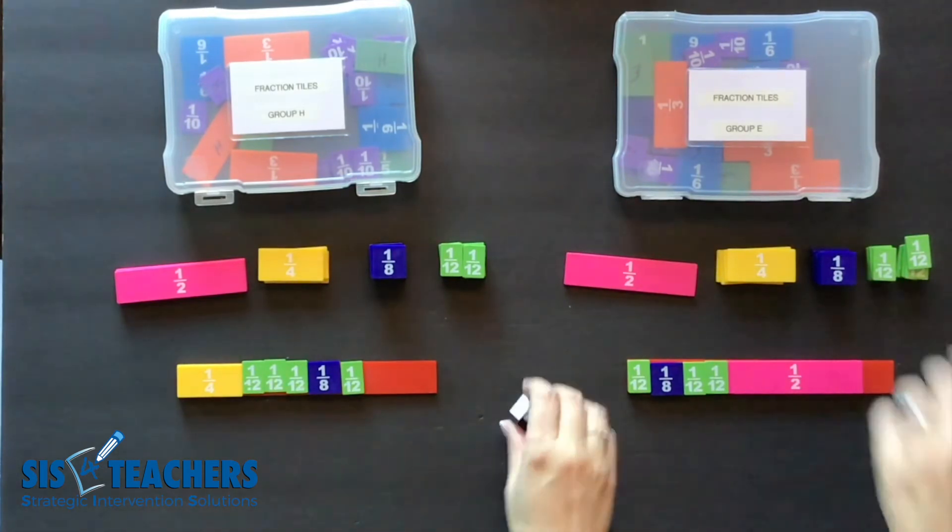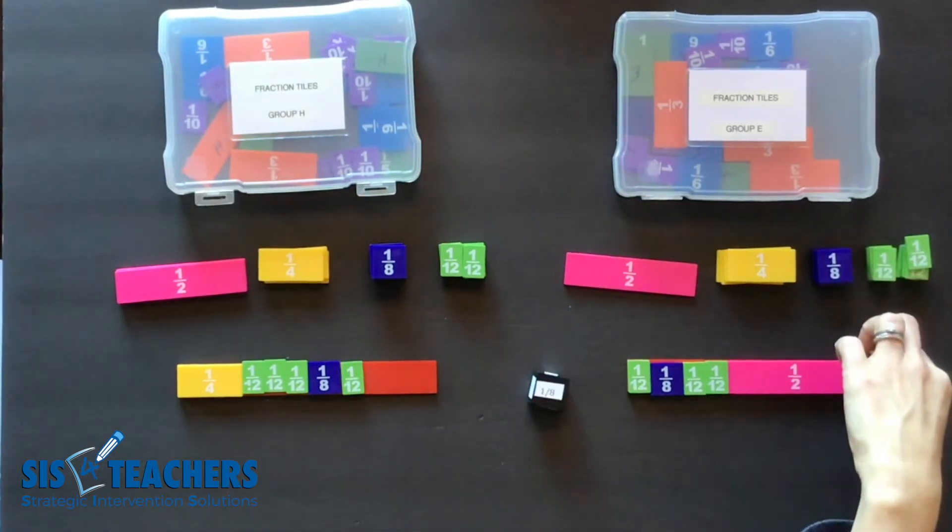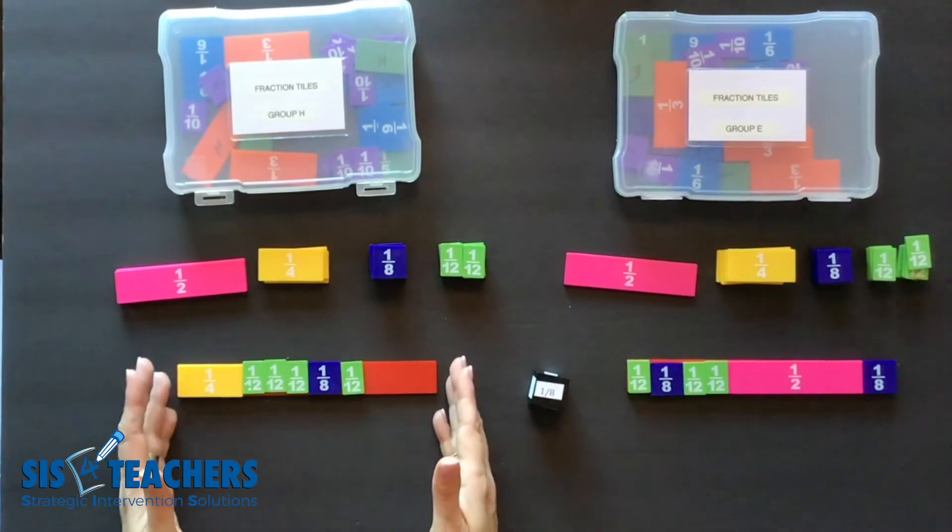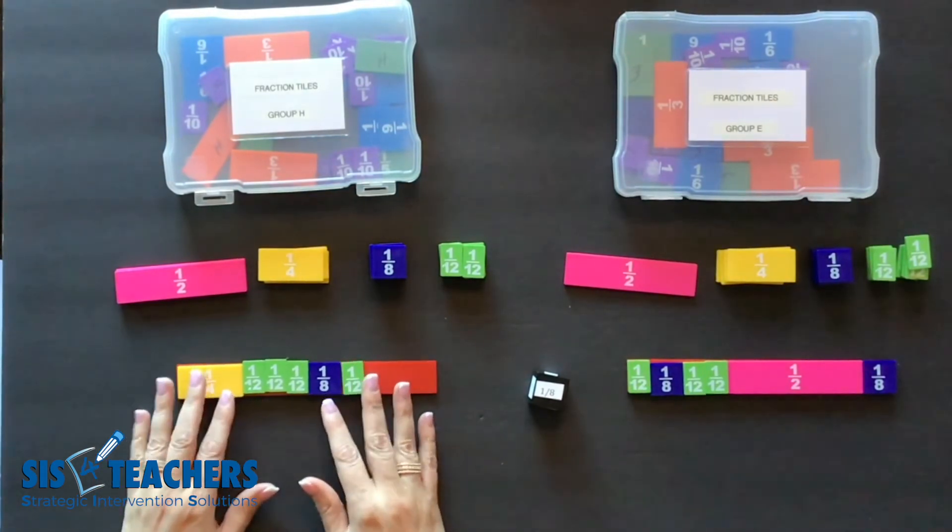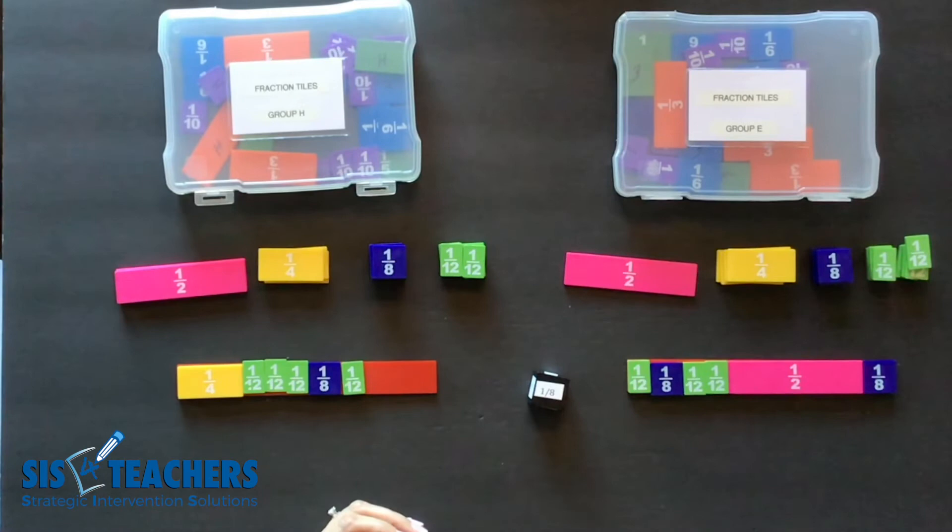Okay she's going to go ahead and roll and ends up winning with the one eighth. This has to be completely full to cover it. Again if you are not able to go you end up missing your turn.